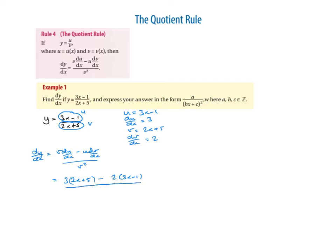Next thing: v squared. v is 2x plus 5, and it's squared. Now, you will never, ever, ever multiply out this bracket unless you're asked to, because you might find a factor on the top that could cancel with it. Never, ever, ever multiply out the denominator when you're using the quotient rule.